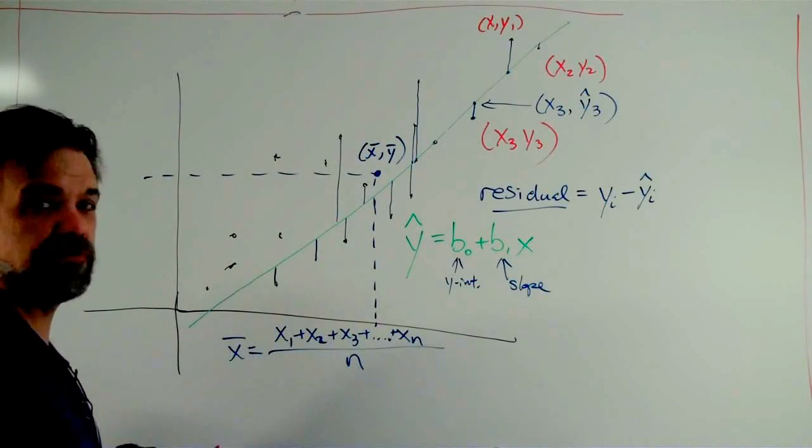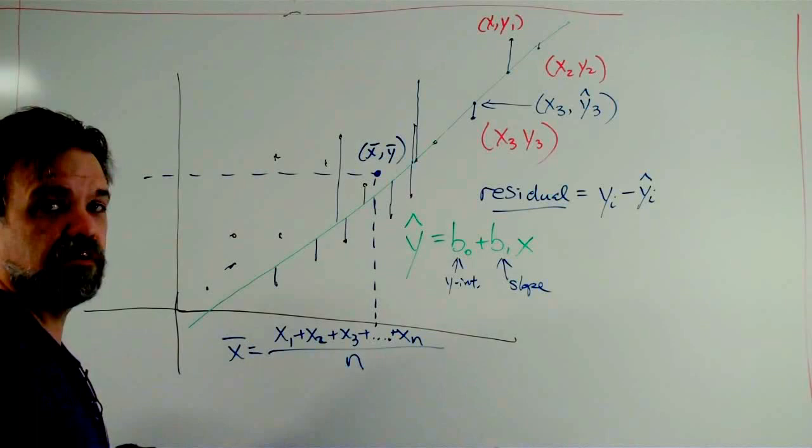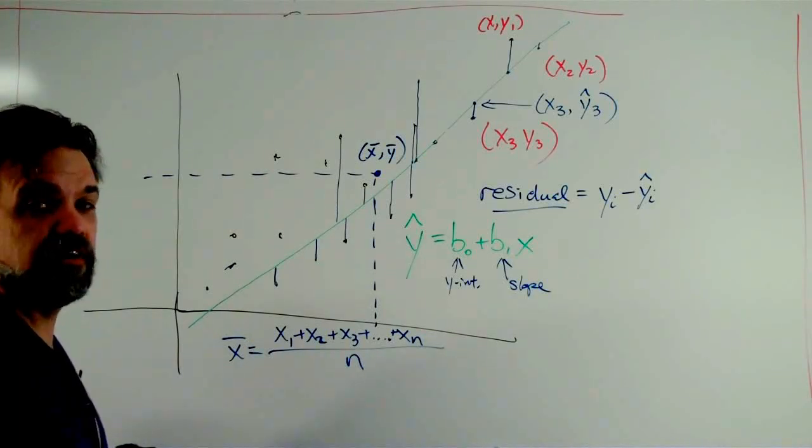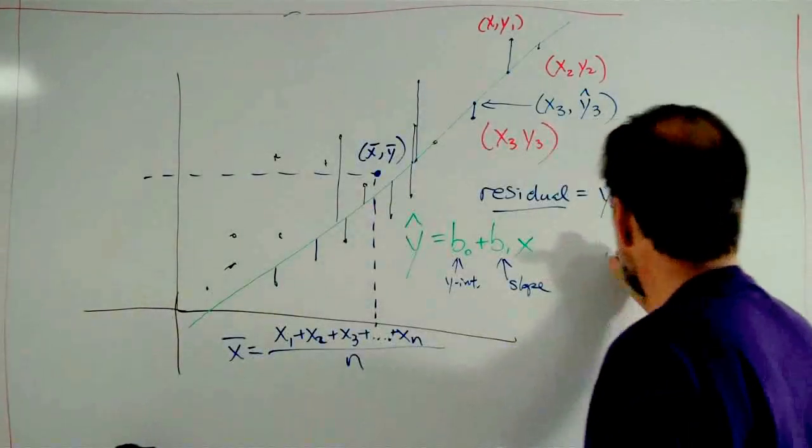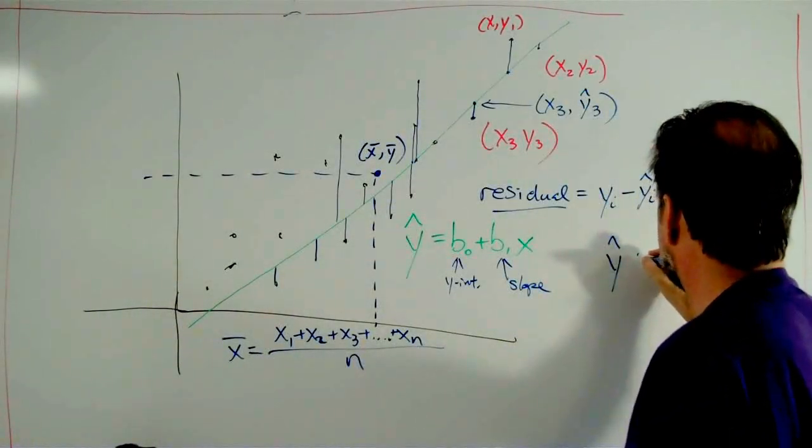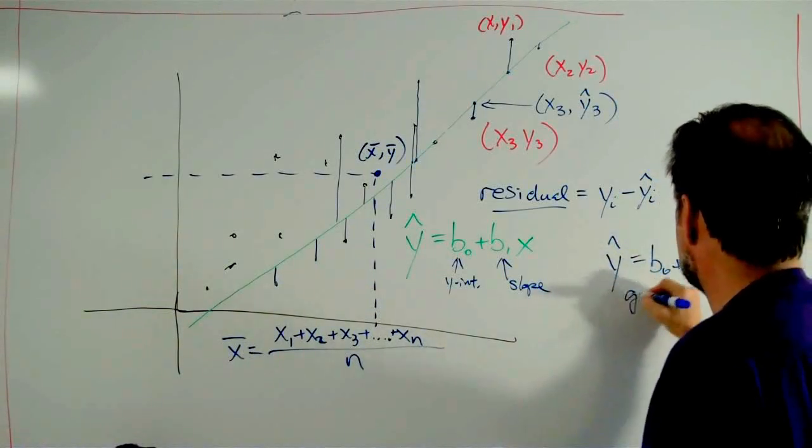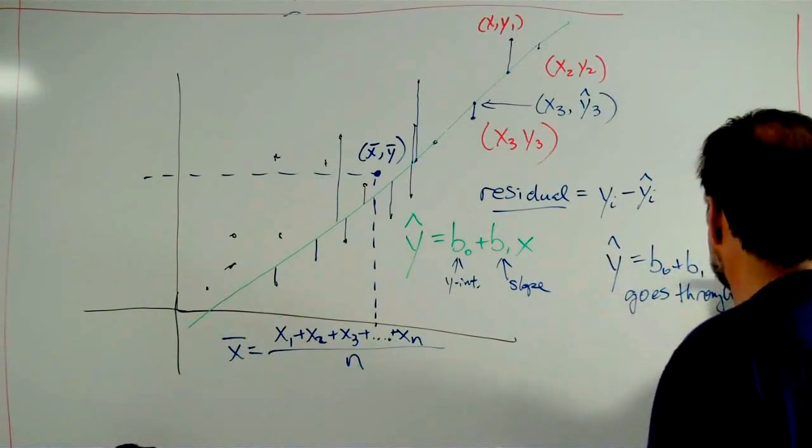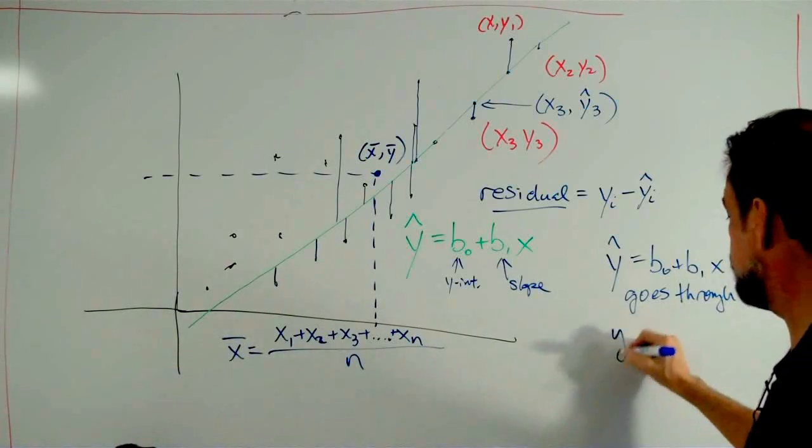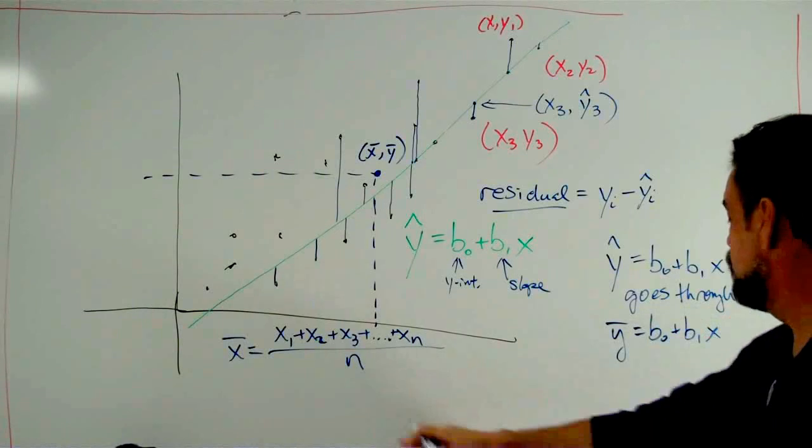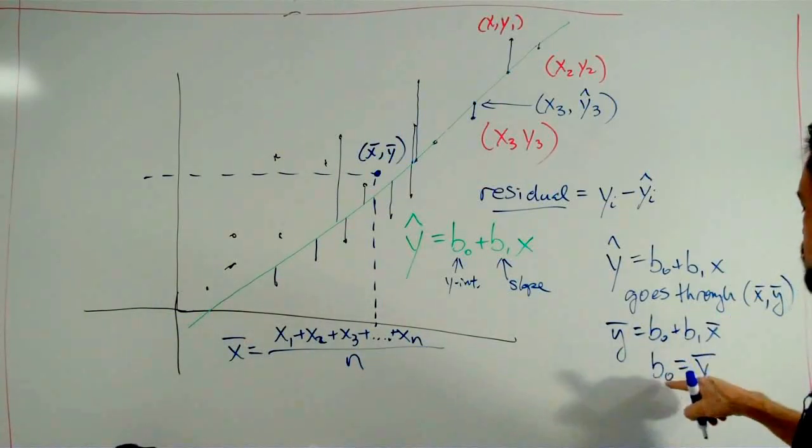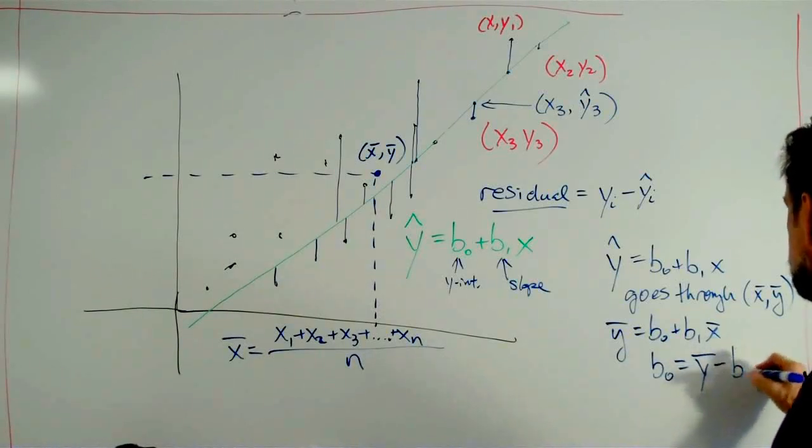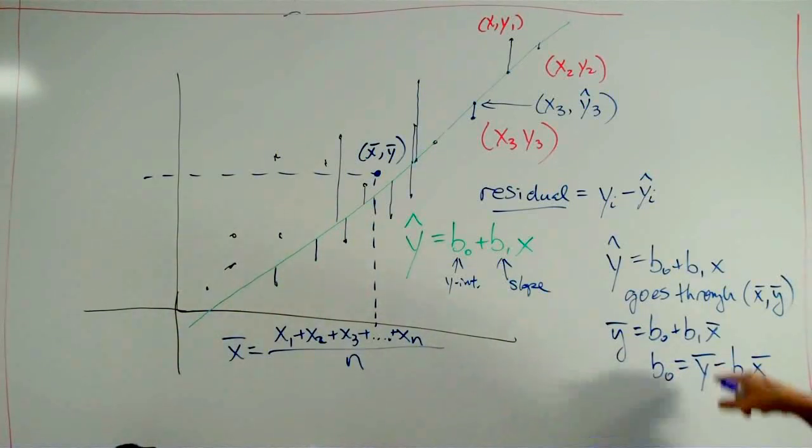Now, if you're thinking to yourself, how do I know this for sure? Then you need to watch another video, and that is the for geeks only video about linear regression. It's very technical, but that's okay. So, what do we know about this line? We know that y hat equals b0 plus b1x goes through x bar, y bar. That is to say, that x bar equals b0 plus b1x, or changing our variables around, it means that b0 equals y bar minus b1x bar. So, that's our y intercept, y bar minus b1x bar.